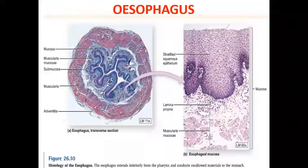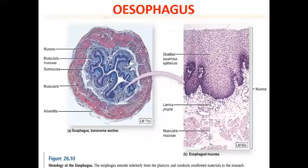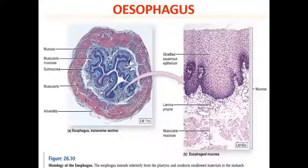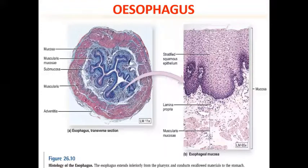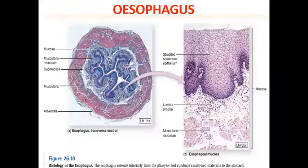In histology, the esophagus lumen is lined by stratified squamous epithelium. Beneath this is the lamina propria and the muscularis mucosa. This is the histology of the esophagus — I'm particularly interested in the type of epithelium lining the esophagus, which you may have already covered in histology or anatomy.